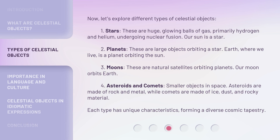Now let's explore different types of celestial objects. First, stars. These are huge, glowing balls of gas, primarily hydrogen and helium, undergoing nuclear fusion. Our sun is a star. Second, planets. These are large objects orbiting a star. Earth, where we live, is a planet orbiting the sun.